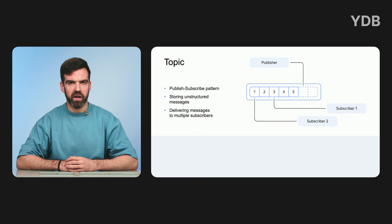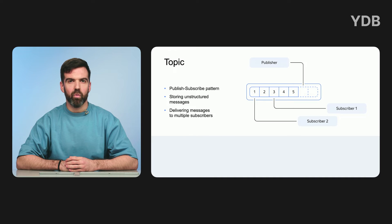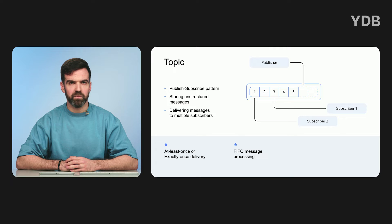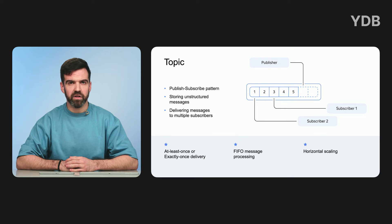A topic in YDB is an entity for storing unstructured messages and delivering them to multiple subscribers. A producer app writes messages to a topic. Consumer apps are independent of each other — they receive and read messages from the topic in the order they were written. Topics implement the publish-subscribe architectural pattern. YDB topics provide at least once delivery guarantees when messages are read, exactly once delivery guarantees when publishing, and first-in-first-out message processing guarantees. To enable horizontal scaling, a topic is divided into partitions that are units of parallelism.